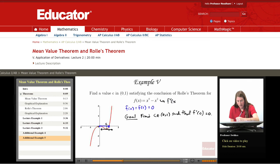f of x is x to the 5th minus x squared. f prime of x is 5x to the 4th minus 2x. So f prime of c is 5c to the 4th minus 2c. We're setting that to 0 and solving for c, and we'll get a result between 0 and 1.